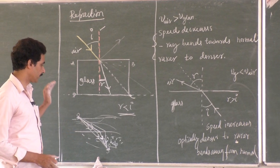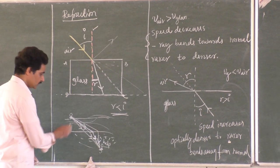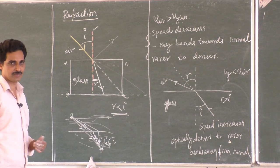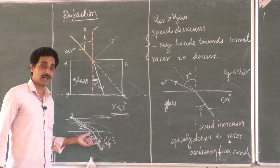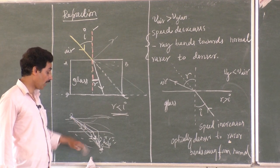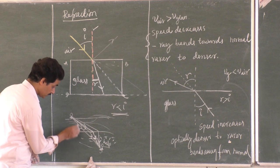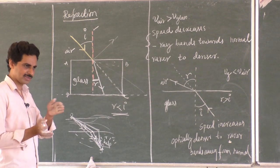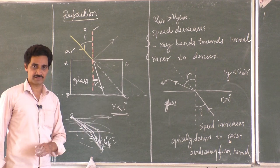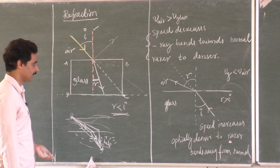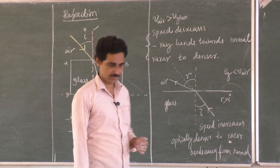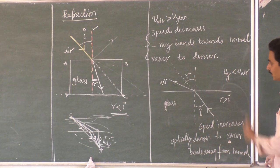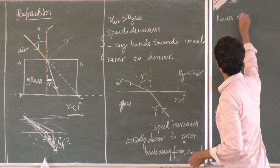So these things should be very clear in your mind with no confusion. When traveling rarer to denser, r is less than i — bends towards the normal. When traveling denser to rarer, r is greater than i — bends away from the normal. Now, which path is optimum? Snell gave an idea using trigonometric functions. We will now define the laws of refraction.